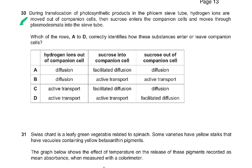Question number 30: during translocation of photosynthetic products in the phloem, hydrogen ions are moved out of companion cells, then sucrose enters the companion cells and moves through the plasmodesmata into the tube. Hydrogen ions out of the companion cell must be active transport. Sucrose into the companion cell is water-soluble, so it has to be facilitated diffusion. The sucrose then accompanies the hydrogen ions moving back in — that is called co-transport. So the answer to question 30 is C: active transport, facilitated diffusion, and then sucrose out of the companion cell through the plasmodesmata by simple diffusion.